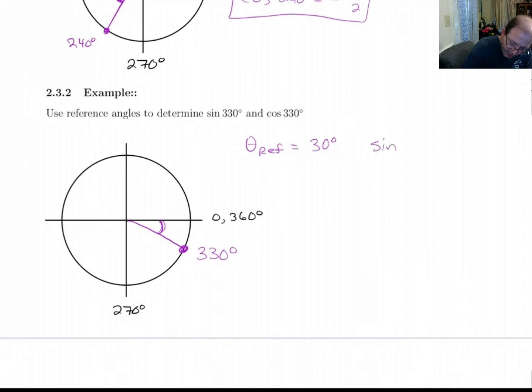All right. So sine of 30 degrees is 1 half. Cosine of 30 degrees is root 3 over 2. I know that from the chart.